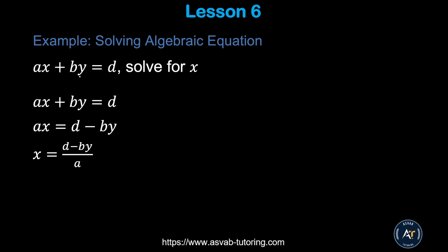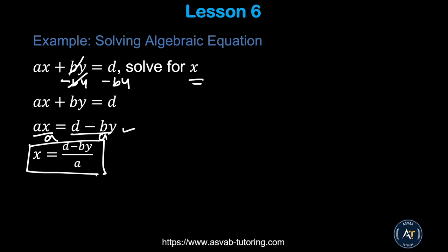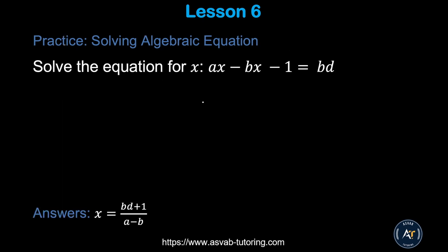Now let's solve a literal equation — one with only variables, no numbers. Many students get confused by these, but it's straightforward. To solve for x in an equation like ax + by = d: subtract 'by' from both sides so the 'by' terms cancel, giving ax = d − by. Then divide both sides by a, giving x = (d − by) / a.